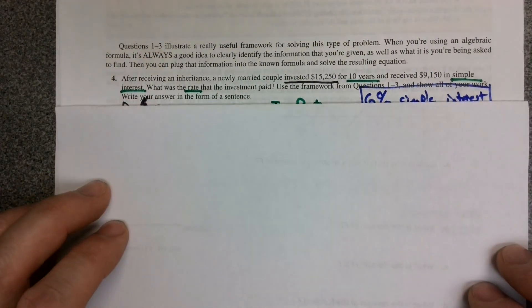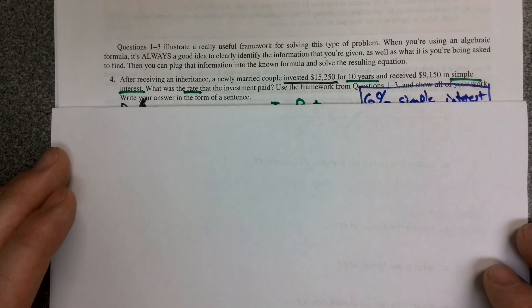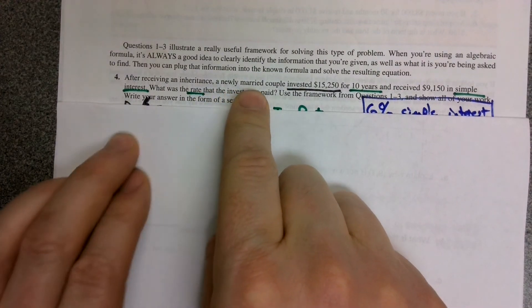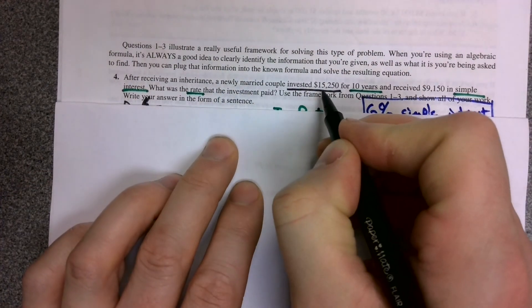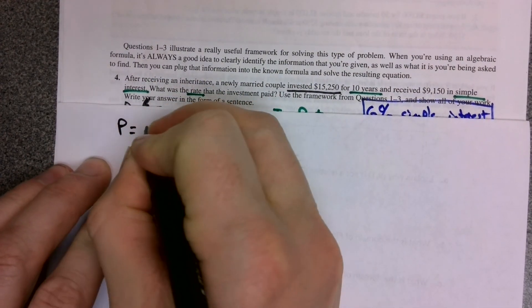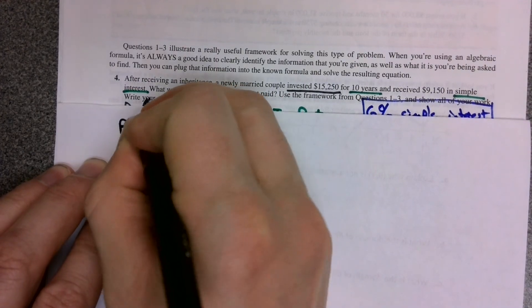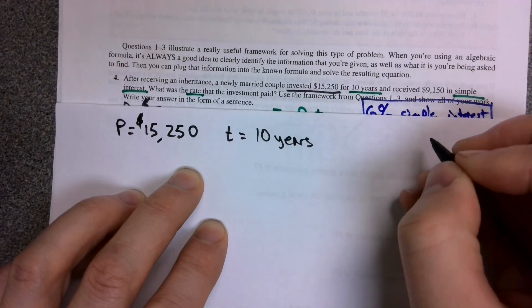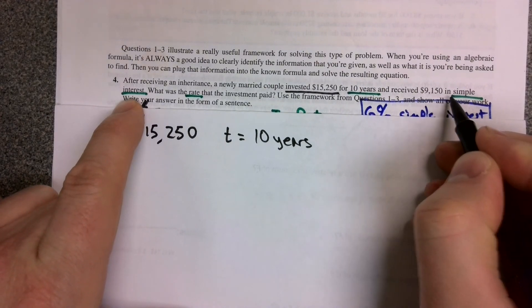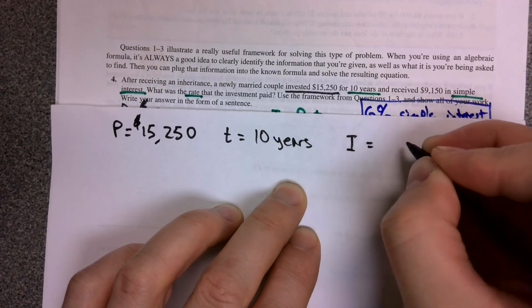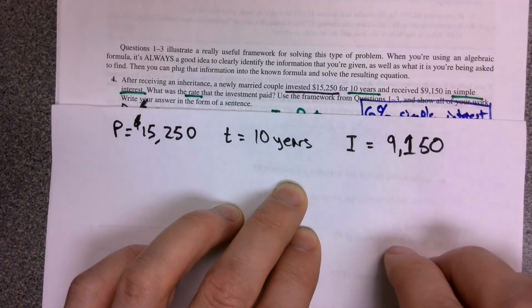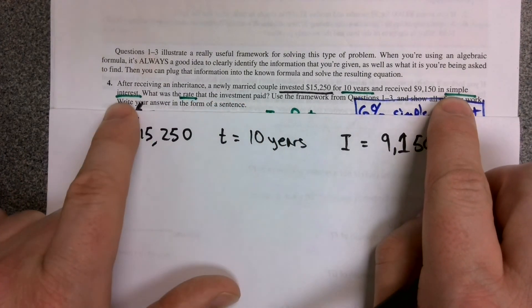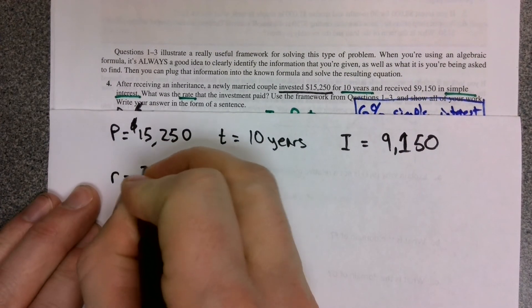Page 211, question four. We now have another problem that we give a different amount of stuff, and we're solving for something different. This time we receive an inheritance. A married couple takes an investment of $15,250. That's going to be your principle. And this married couple is investing this for 10 years, and we're receiving $9,150 in simple interest. Notice that means our I is equal to $9,150. So the question here is, what was the interest rate that you earned on that investment?